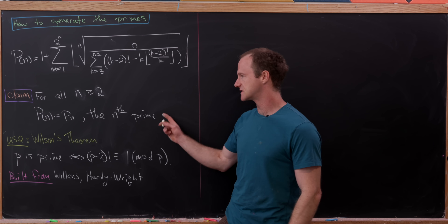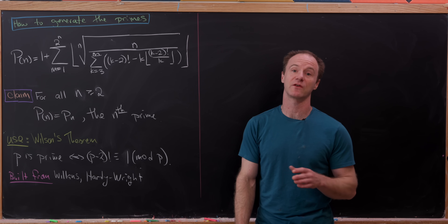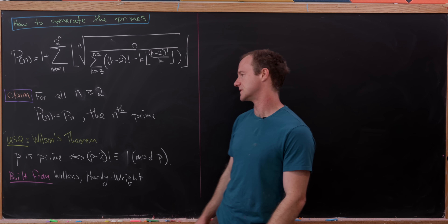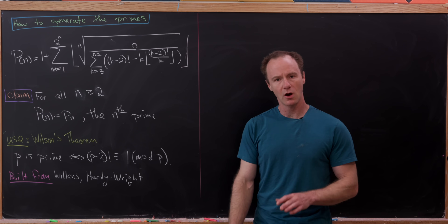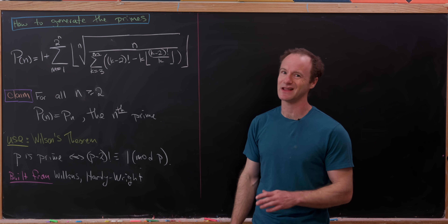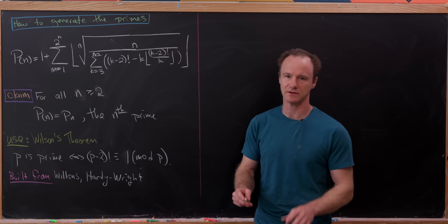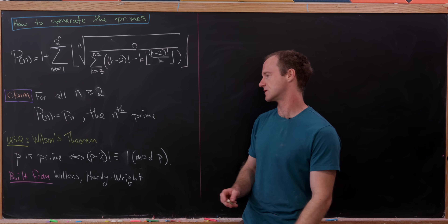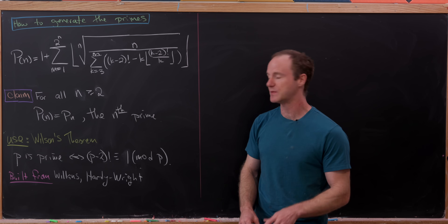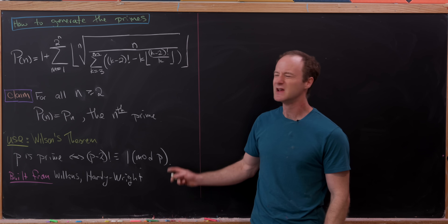This covers all prime numbers except for the first prime number, but we all know what that is. Along the way we'll use Wilson's theorem — in fact, a lot of these prime generating functions are built out of Wilson's theorem. It states that p is prime if and only if (p minus 2) factorial is congruent to 1 mod p. This may not be the standard way of stating Wilson's theorem, but it is equivalent.